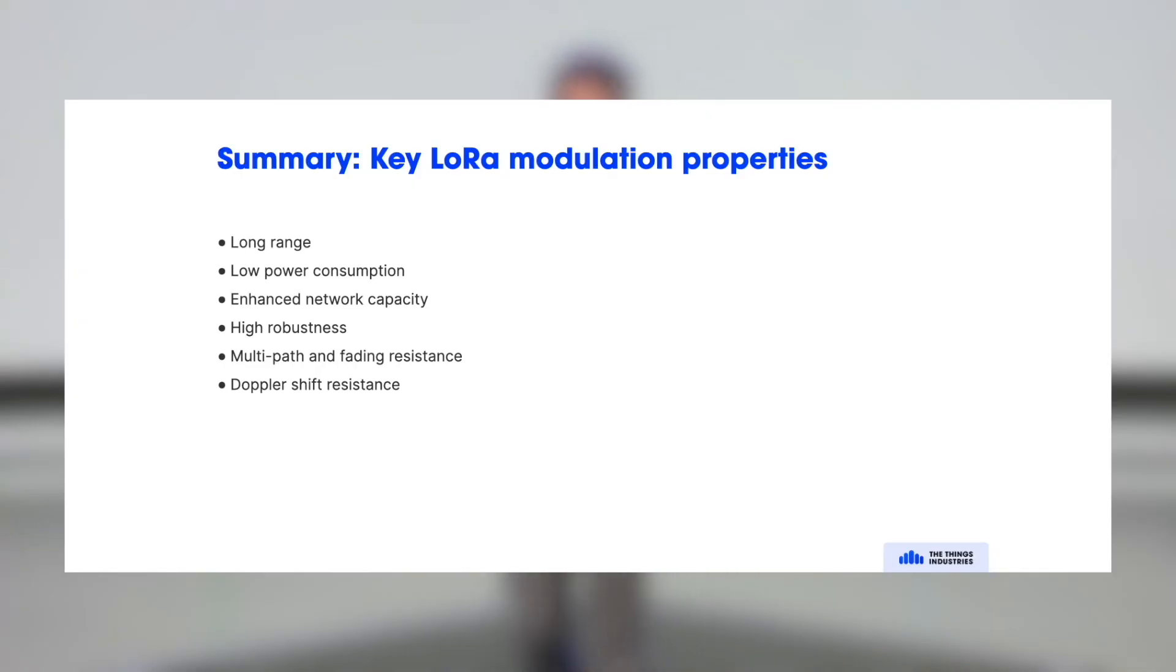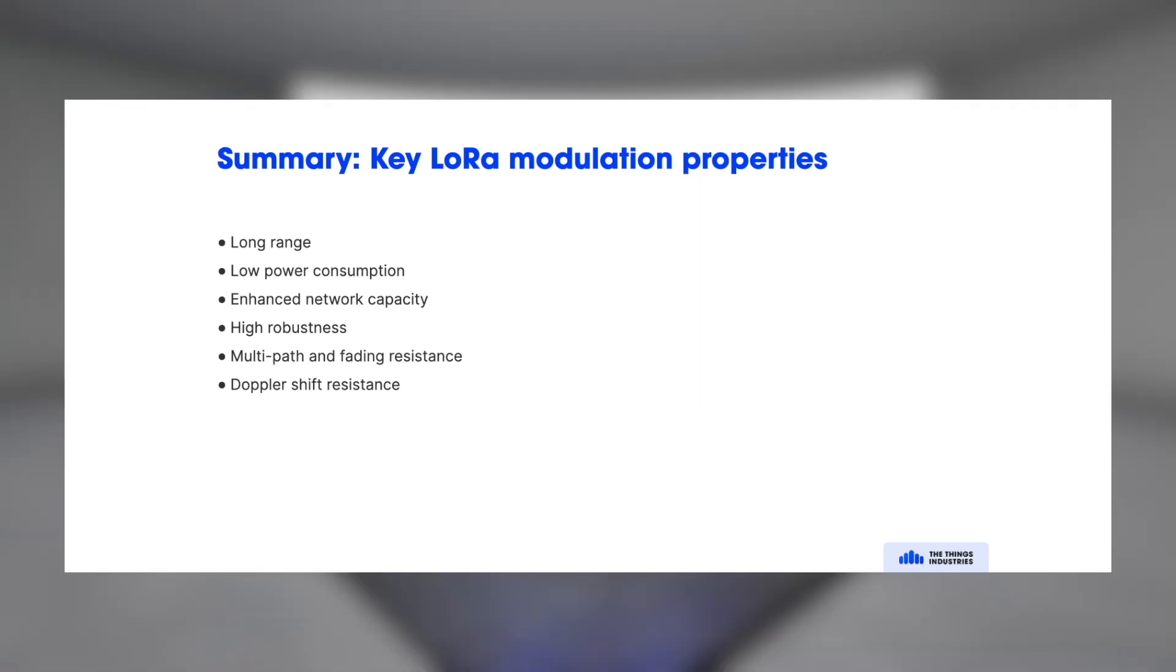So summarizing on LoRa, it's long range, it's a very low power consumption. Because of all sorts of mechanisms you can have a very high network capacity. It's robust to many different things like interference, multipath, fading, Doppler effect, and that makes it a really good choice for IoT solutions. Thank you.